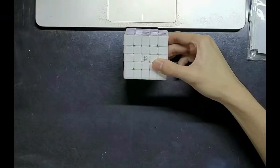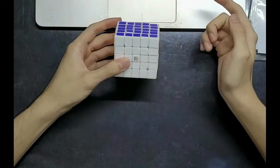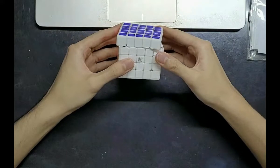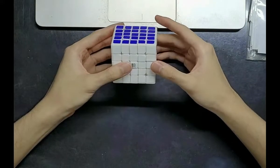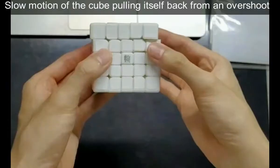Core magnets achieve a few things. First, they can attract from a wider distance, so this means that a bigger misalignment can still be put back to the core more easily as opposed to just purely piece magnets. If you overshoot, the cube can also pull itself back to a bigger degree.